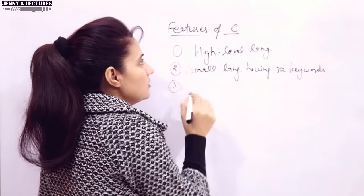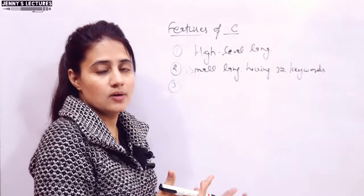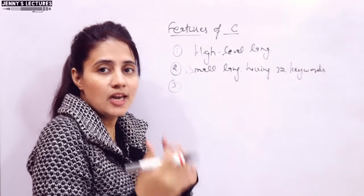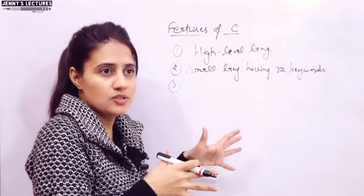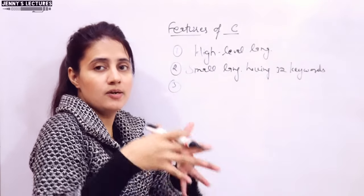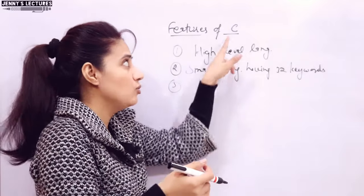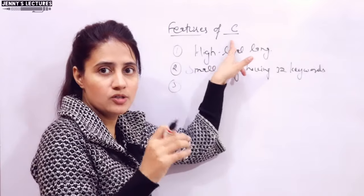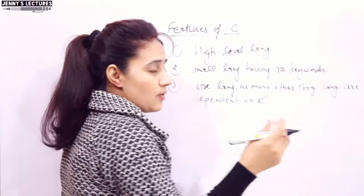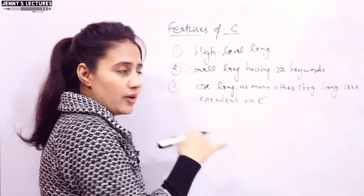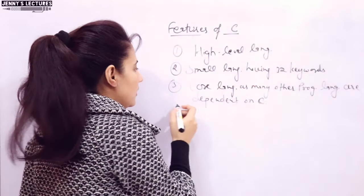The third feature is that C is a core language. Many other languages are dependent on it — C++ and Java are derived from C language. So it is a core language, and languages like C++ and Java drive their features from C.